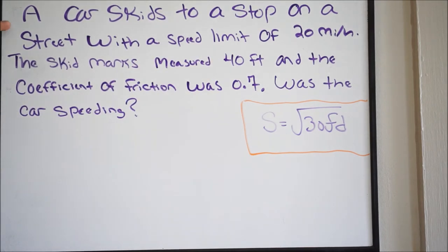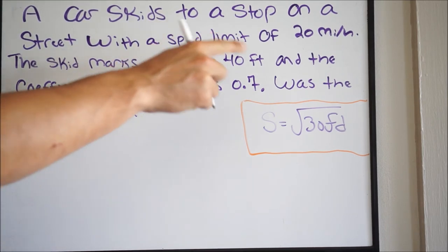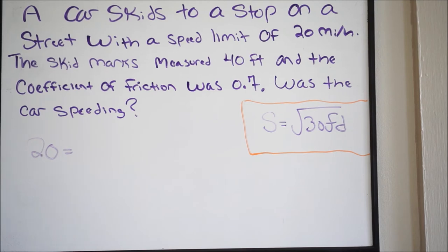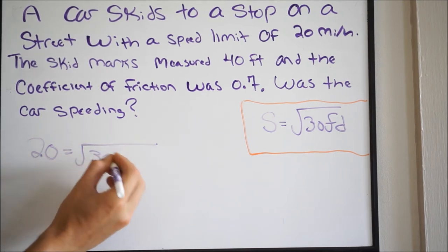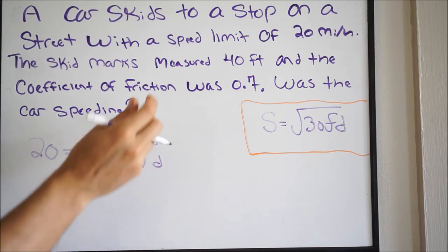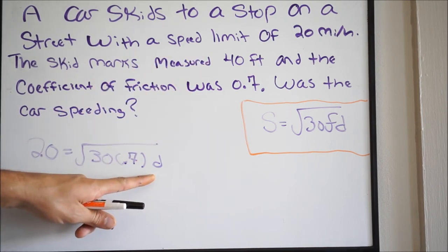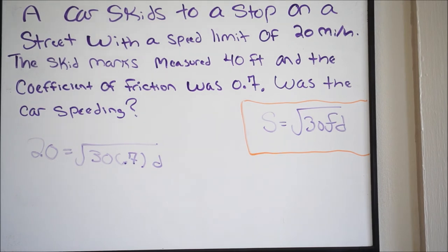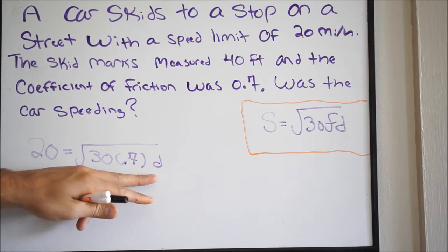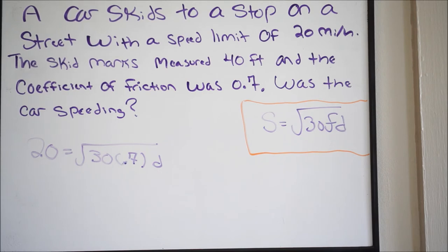We know the speed limit was supposed to be 20 miles per hour, so we're going to plug in 20 for S. We'll have 20 equal to the square root of 30 times the coefficient of friction 0.7. However, we're not going to plug in our D value of 40 — we're actually going to solve for D and compare it to the measured skid mark distance. If D is larger than what was measured, we know they were going faster. If it's smaller, they were going slower and below the speed limit.